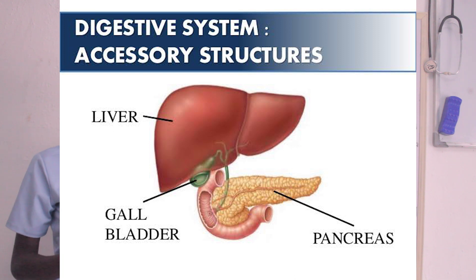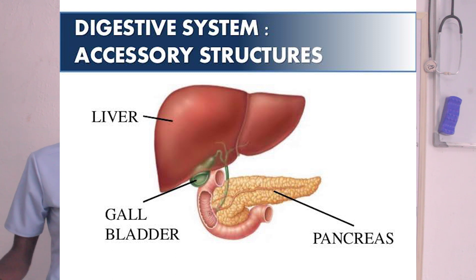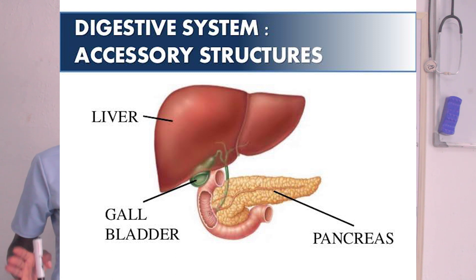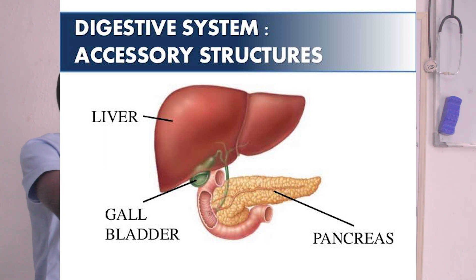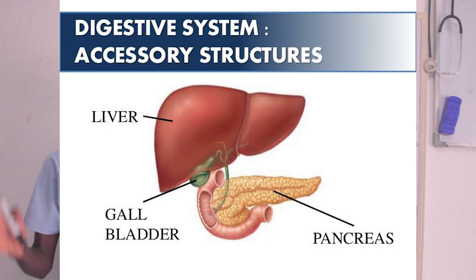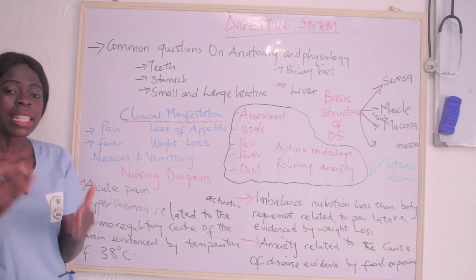The liver can also be seen as an accessory organ of the digestive system, as can the pancreas and the salivary glands. All these organs and glands pour their secretions into the alimentary canal through a duct, which is why they are known as accessory organs of the digestive system.